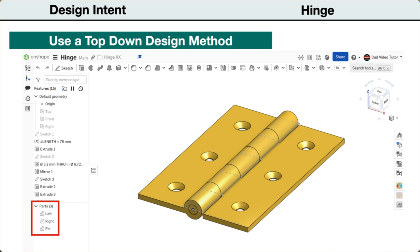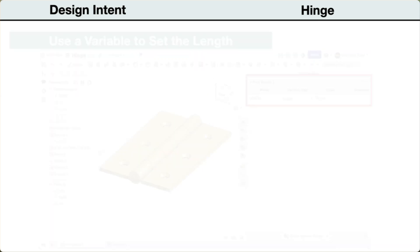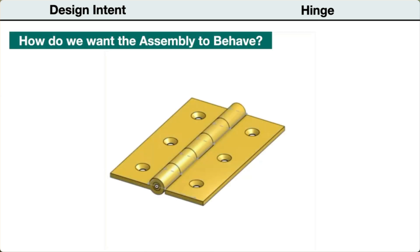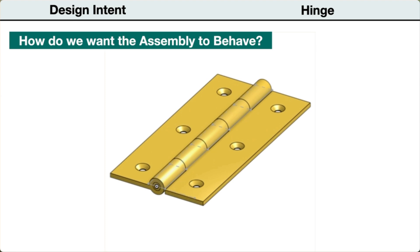Using a top-down modeling method helps establish our design intent by modeling the parts together in the same part studio and sharing the associated parameters between parts. In the Onshape document, the length can be set as a variable. We can then use this parameter to drive changes to all of the parts and enforce our design intent, so it would update to the new length meeting the design intent without errors.